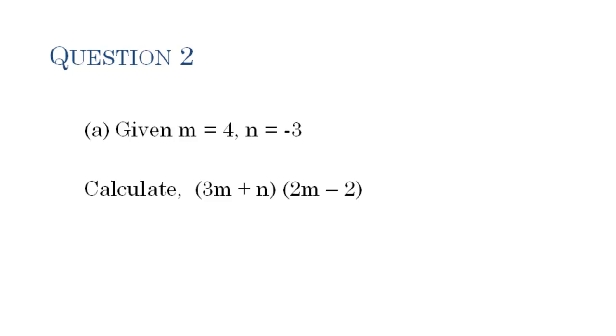The first thing I will do is write back the equation and substitute in 4 for m and minus 3 for n. So where we have m we're going to put in 4. That's plus where we have n we're going to put minus 3. All that is going to be multiplied by 2 times, where we have m we're going to put in 4. That is minus 2.